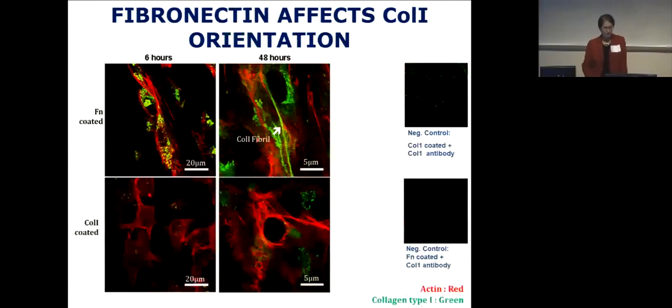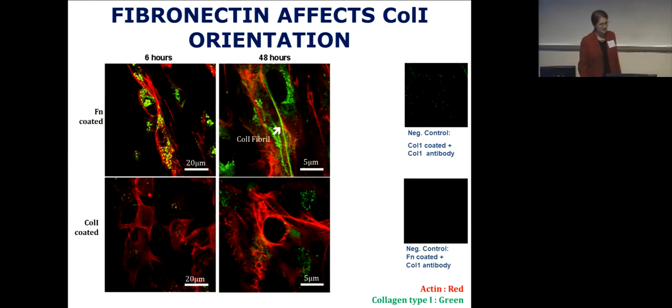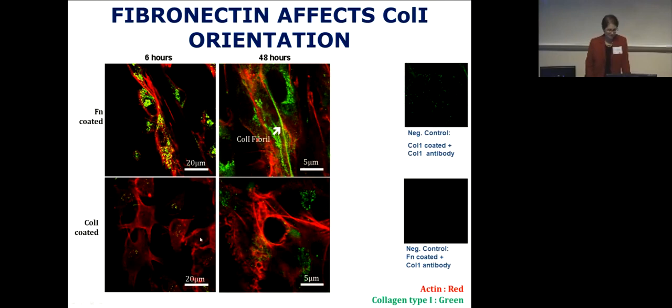We then asked about collagen. Staining cells on fibronectin- or collagen-coated scaffolds with antibody reactive with type 1 collagen and imaging by confocal microscopy showed that over time, cells on fibronectin scaffolds produce collagen forming fibrils aligned parallel to the cells. In contrast, you don't see that in cells on type 1 collagen-coated scaffolds. Clearly we had found the right scaffold and conditions.